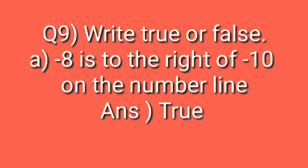True or false? Negative 8 is to the right of negative 10 on the number line. Now, you know negative 8 is greater than negative 10. So negative 8 will be to the right of negative 10. So it is a true statement.